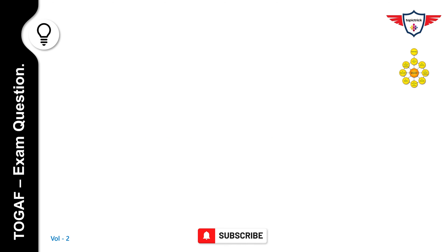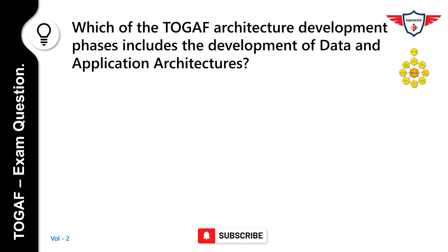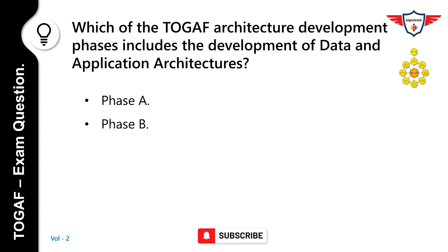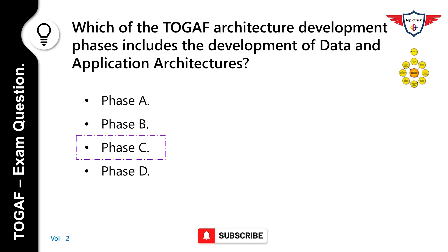Which of the TOGAF architecture development phases includes the development of data and application architectures? Options: Phase A Architecture Vision; Phase B Business Architecture; Phase C Information Systems Architectures; Phase D Technology Architecture. The correct answer is Phase C. In the Information Systems Architecture phase, that is Phase C, the data and application architectures for an architecture project are developed.